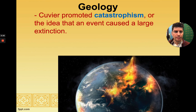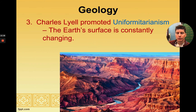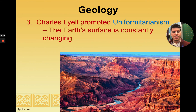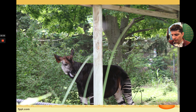Darwin used Charles Lyell's idea of uniformitarianism to help sculpt his idea of evolution. Uniformitarianism states that Earth's surface is constantly changing, but at a consistent rate — it's not that things stay the same, but rather that the rate of change is uniform.